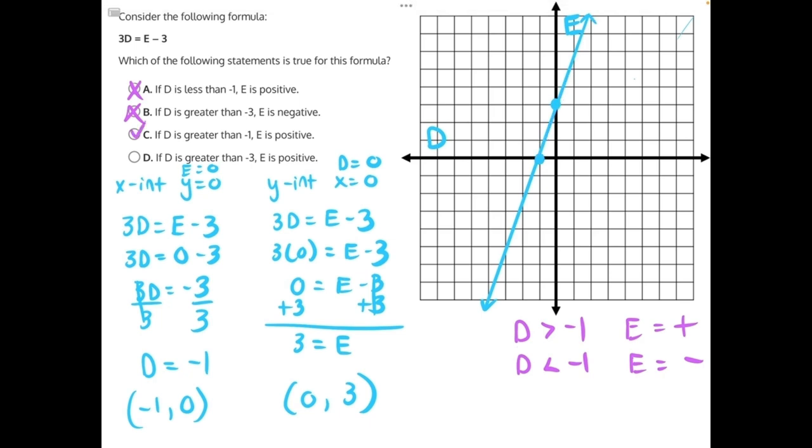Now, taking a look at answer D very quickly. If D is greater than negative 3, negative 3 is here again, E is positive. This is not true because at first, everything that's greater than this point is negative until it passes this intercept, and then we start to get to positive values. So D is incorrect, making C our correct answer.